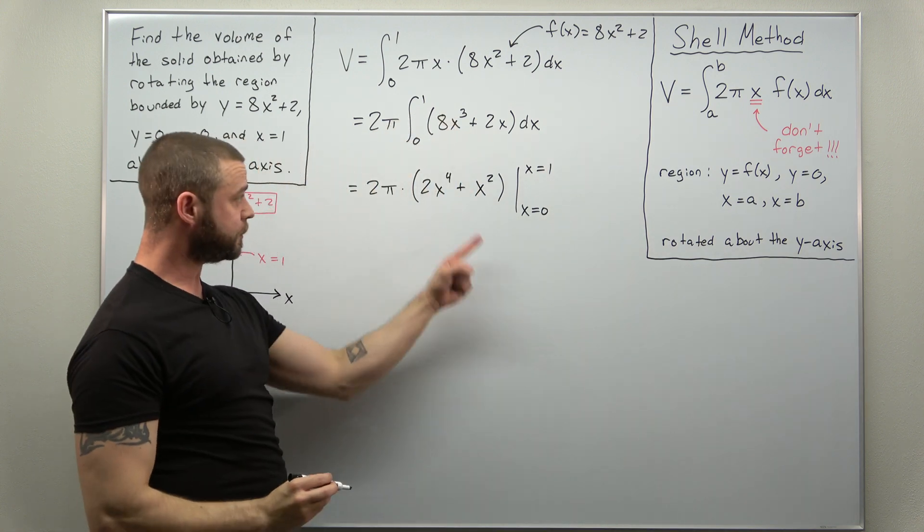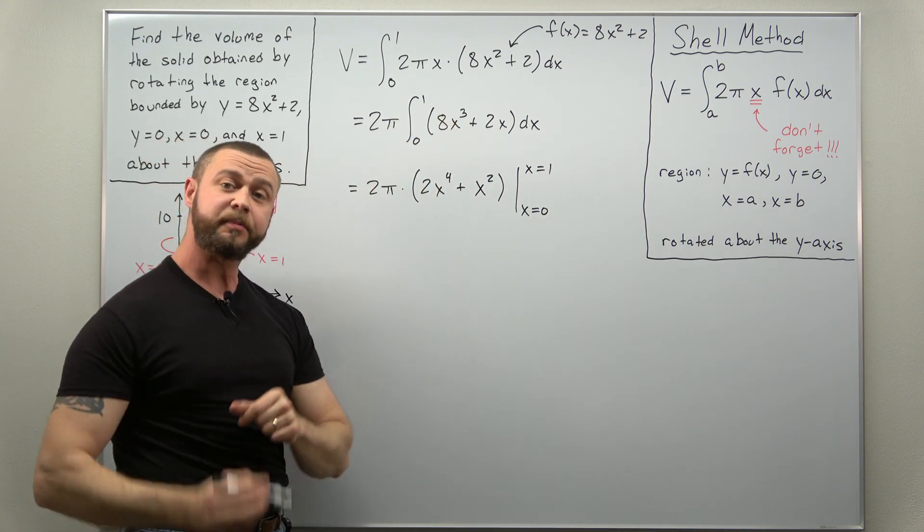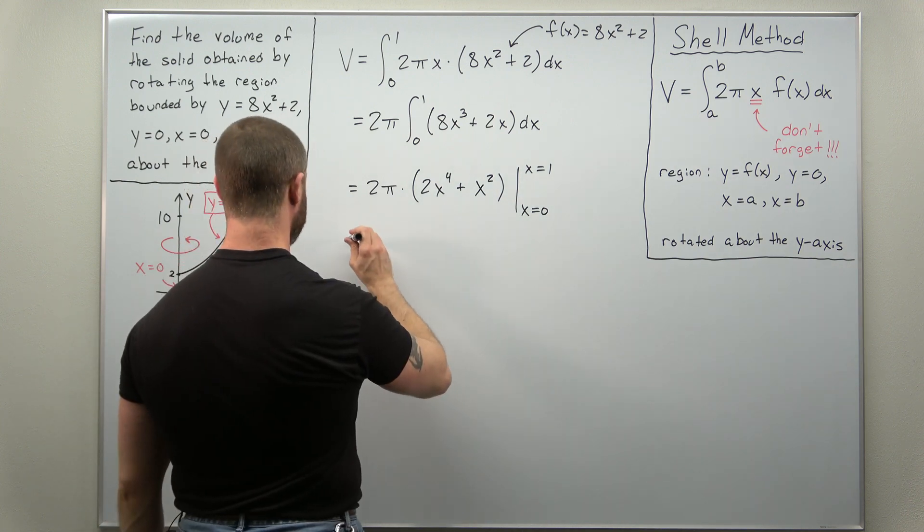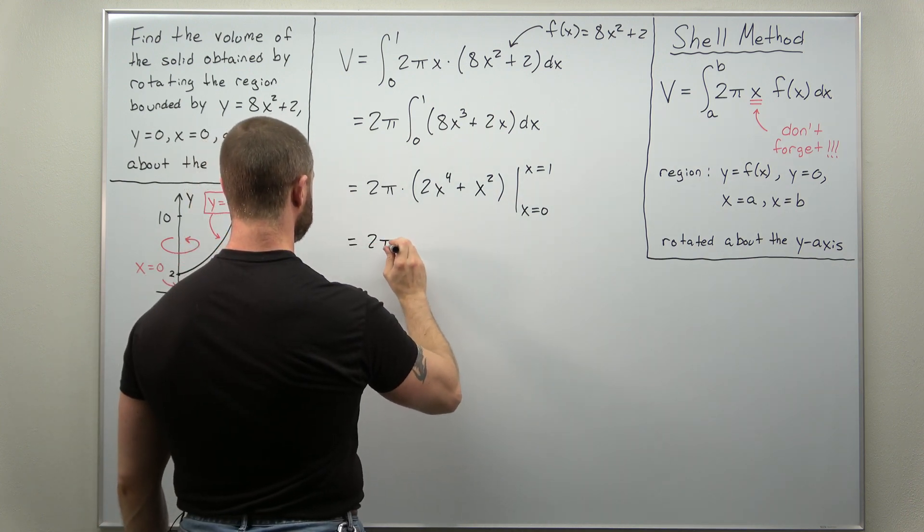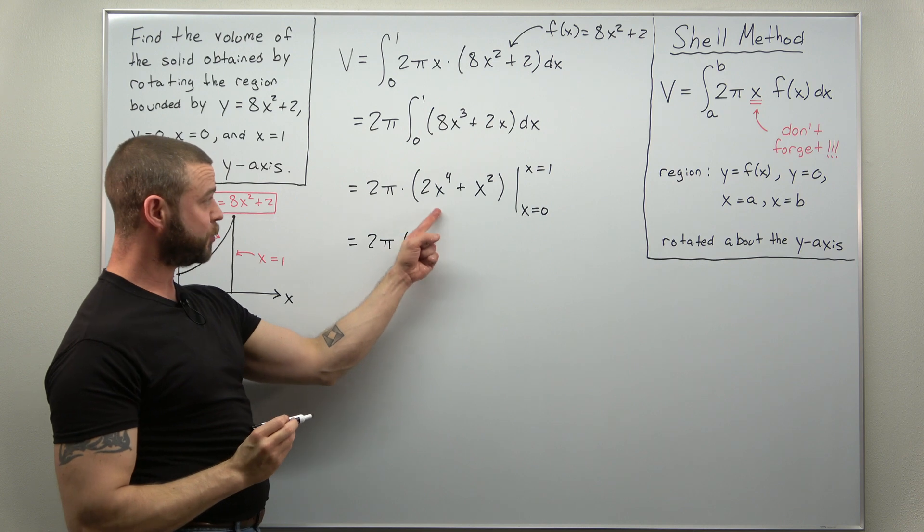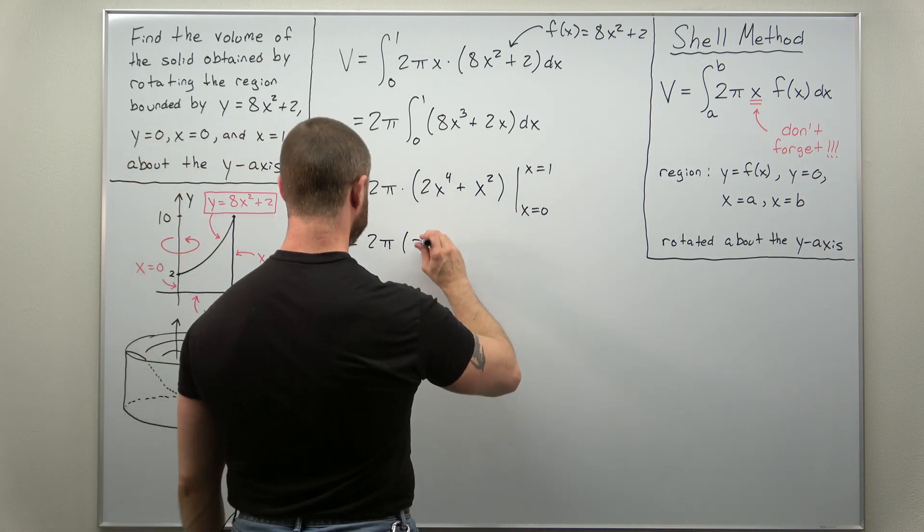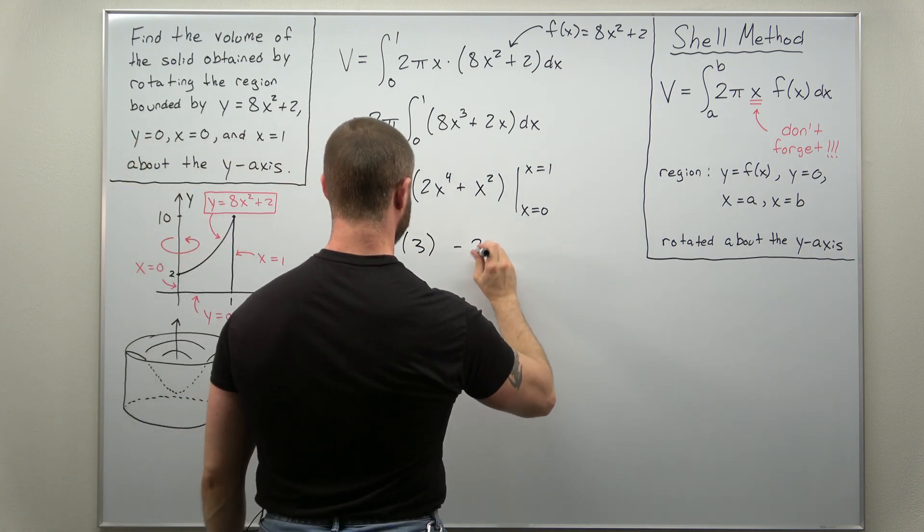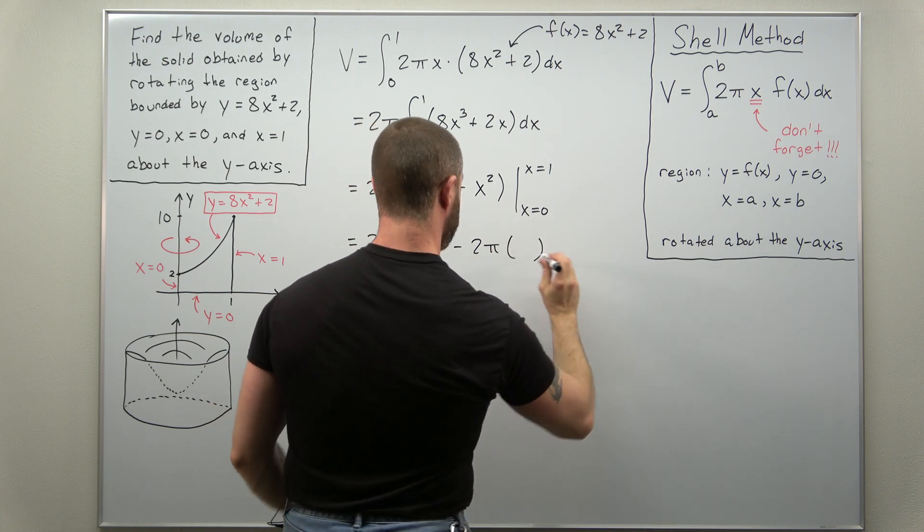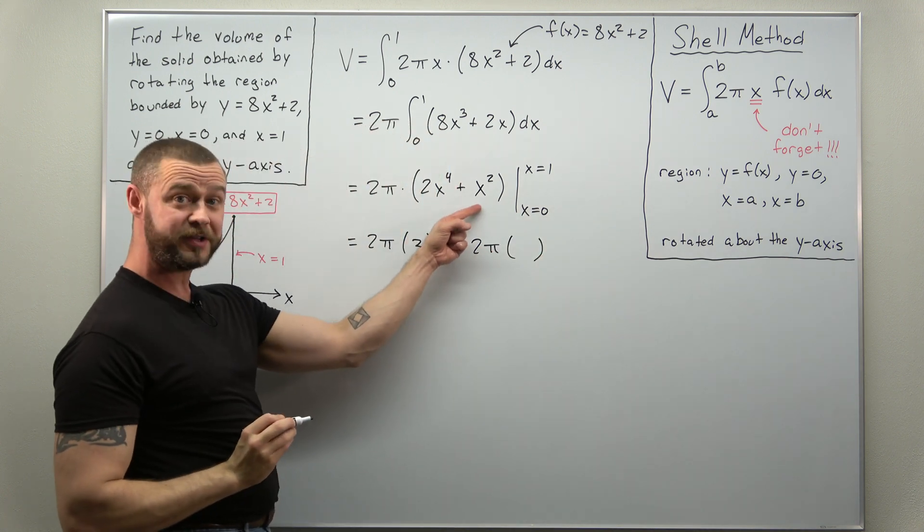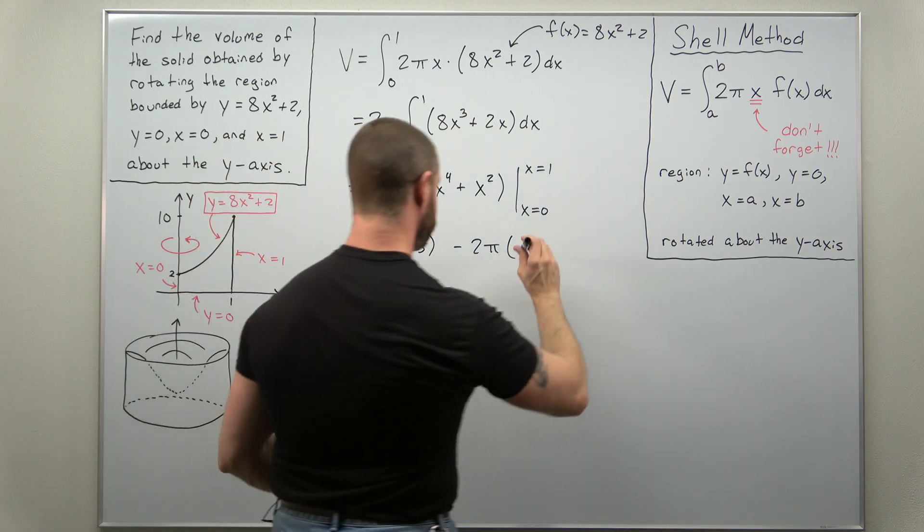Alright at this point we just need to plug in x as 1 and then subtract when we plug in x as 0. And if you plug in x as 1 that's really nice. Looks like you're just going to get 3. And when you plug in x as 0 to that, that evaluates to 0.